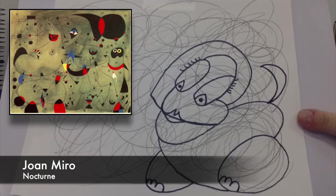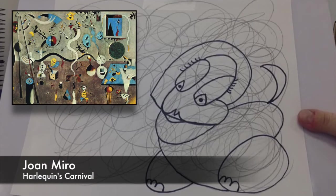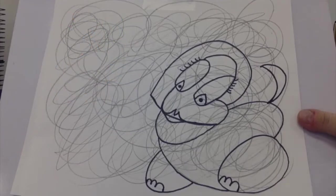If you look up some of his images, like Nocturne, that being one of them, they really look like these characters that we find in these scribble lines.